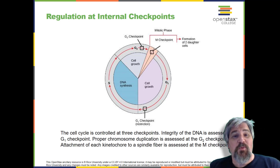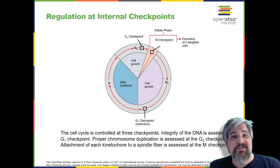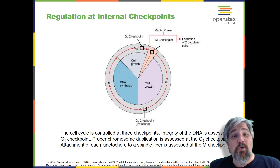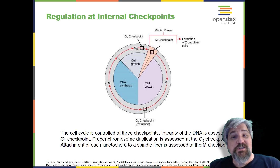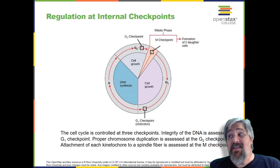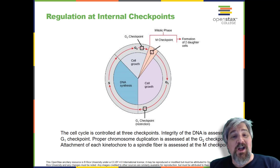The G1 checkpoint determines whether all conditions are favorable for cell division to proceed. The G1 checkpoint, also called the restriction point, is the point at which the cell irreversibly commits to the cell division process. In addition to adequate reserves and cell size, there is a check for damage to the genomic DNA at the G1 checkpoint. A cell that does not meet all the requirements will not be released into the S phase.